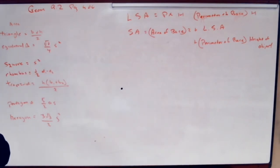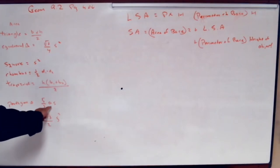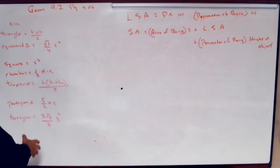Pentagon, it's five divided by two times the apothem times the side, the apotherm, apothem, whichever way to say it right. Hexagon, three times the radical three divided by two times side squared.